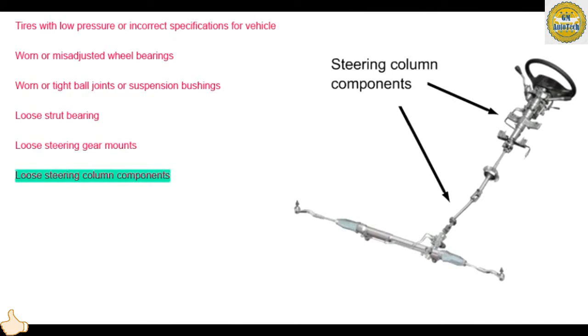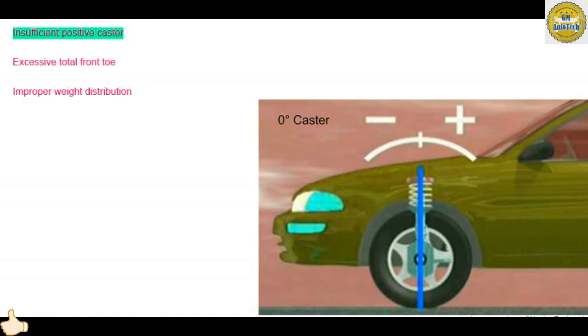Insufficient positive caster causes a lack of directional stability. If the steering axis is too close to zero degrees, the point at which the tire pivots is nearly straight up and down. This means that the forces that lead the tire in a specific direction are diminished. To correct this condition, you should review the caster specification for both front wheels and make the proper adjustments.